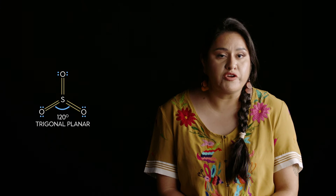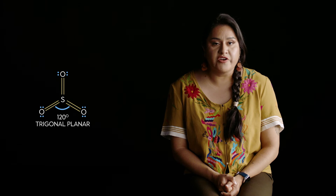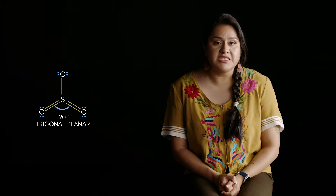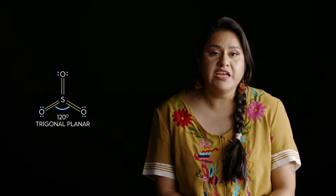In this structure, the sulfur has three electron domains, so it has a trigonal planar electron group geometry. There are no lone pairs on the sulfur — all three groups of electron density are bonds. Therefore, the molecular shape of sulfur trioxide is trigonal planar. Finally, the three bond moments all cancel out. Sulfur trioxide is therefore non-polar.